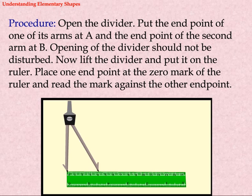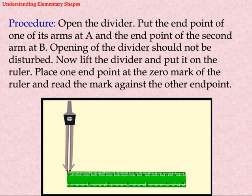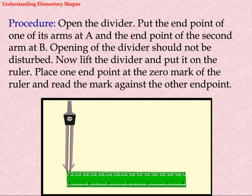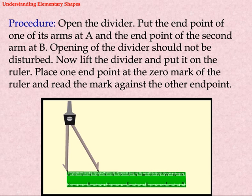Procedure: Open the divider. Put the end point of one of its arms at A and the end point of the second arm at B. The opening of the divider should not be disturbed. Now lift the divider and put it on the ruler. Place one end point at the zero mark of the ruler and read the mark against the other end point.